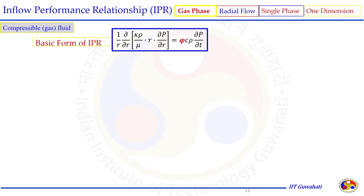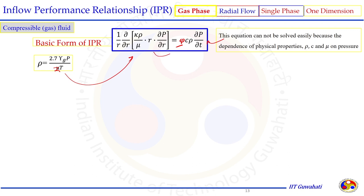Let us see one case of compressible gas fluid where we use the basic IPR form with φ constant. For compressible gas we replace ρ = 2.7·γ_g·P/z·T. Substituting this into the basic IPR equation gives an equation that cannot be solved easily — it does not have an analytical solution for compressible fluid because the properties ρ, C, and μ all depend on pressure. When pressure is changing, those fluid properties cannot be taken as constant.